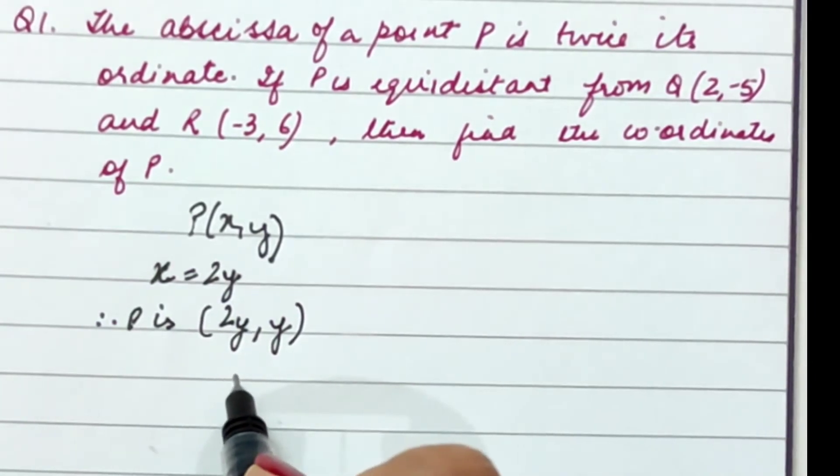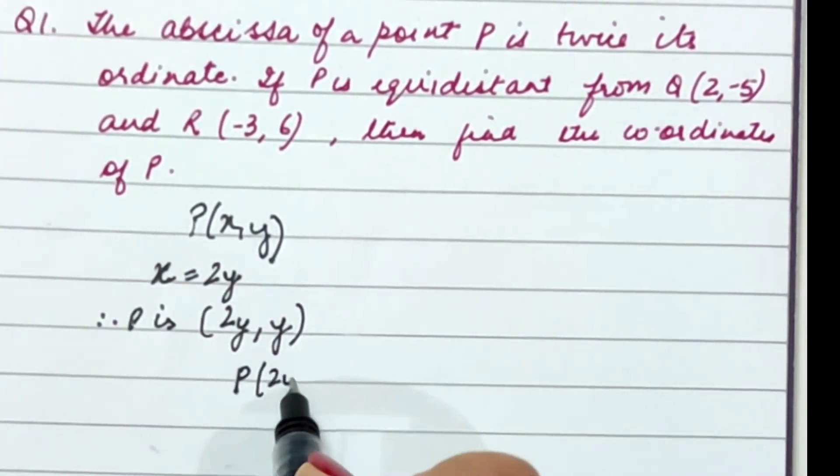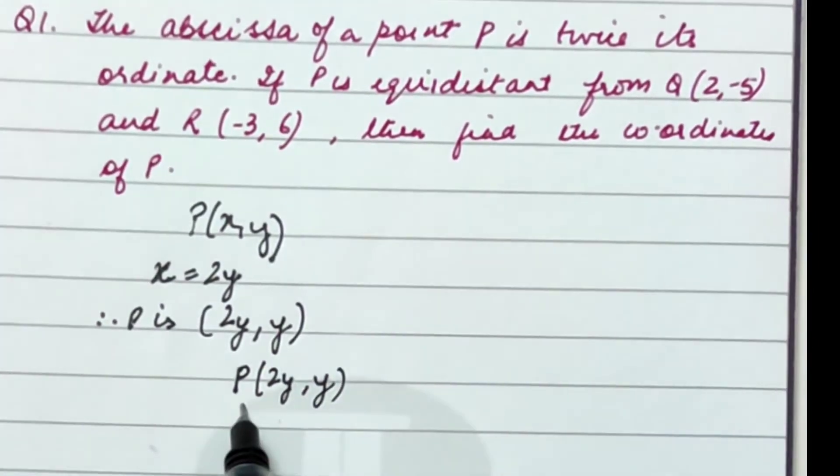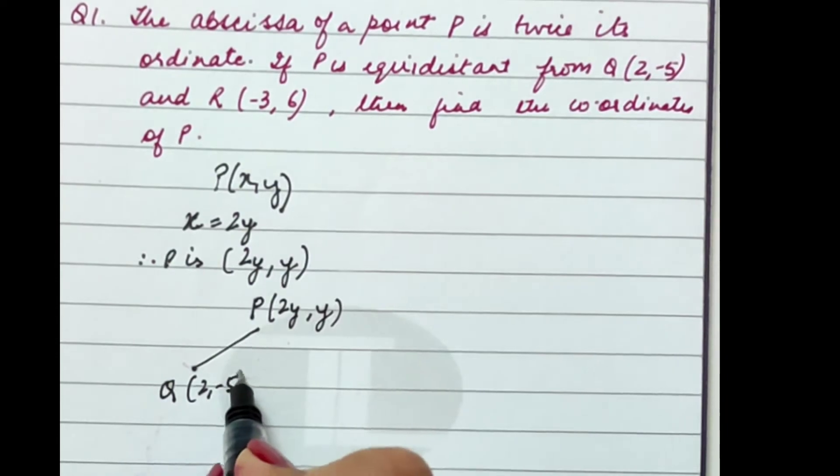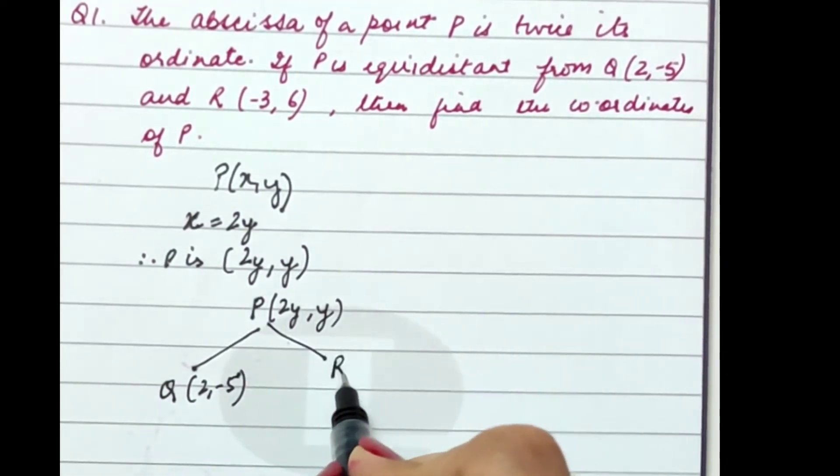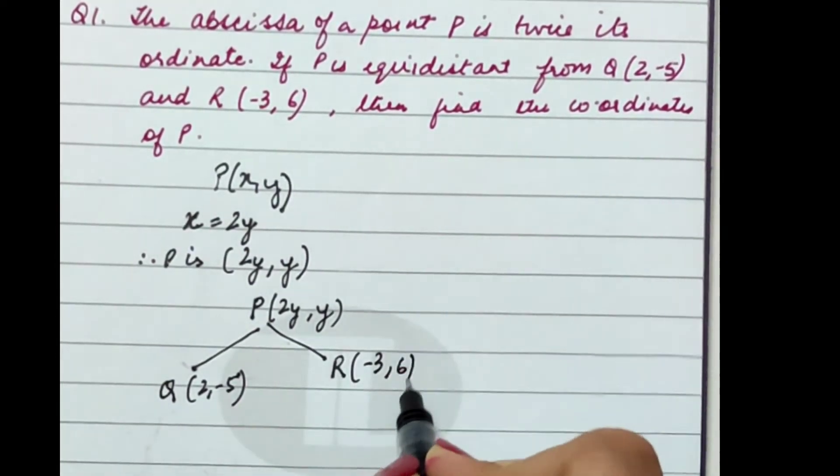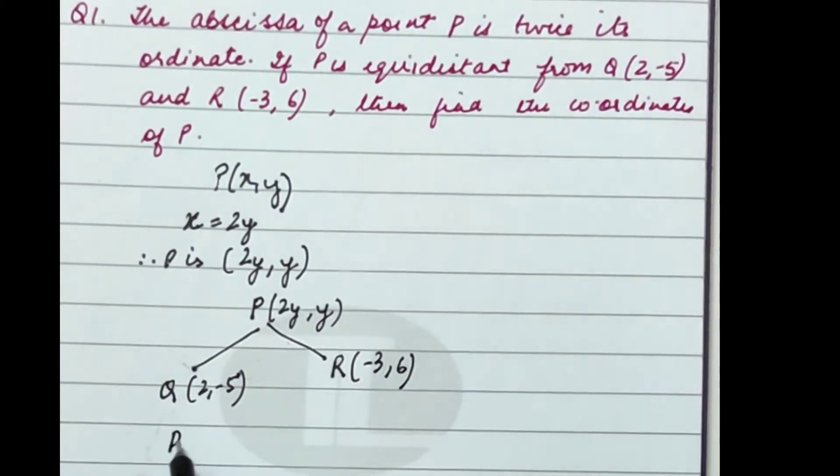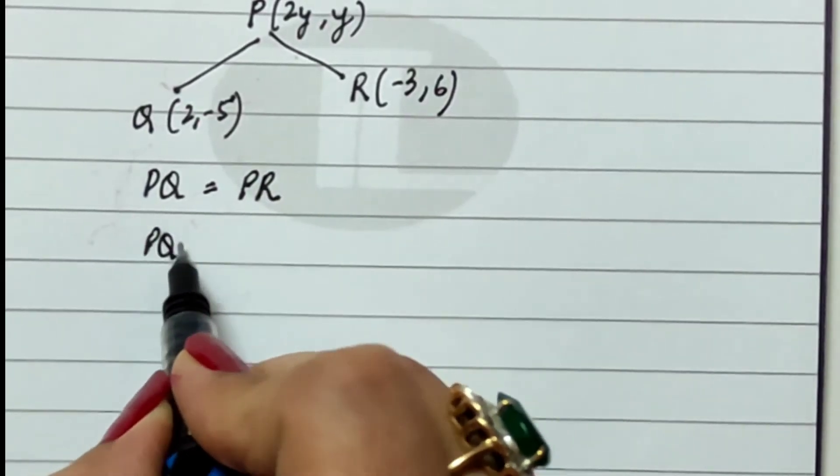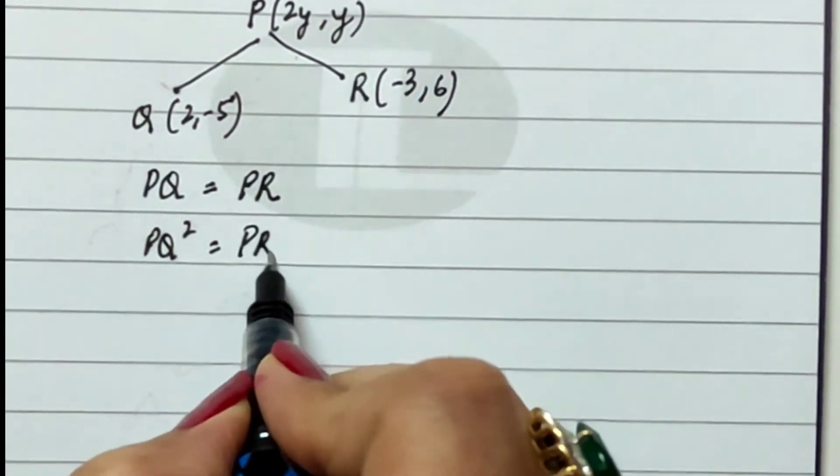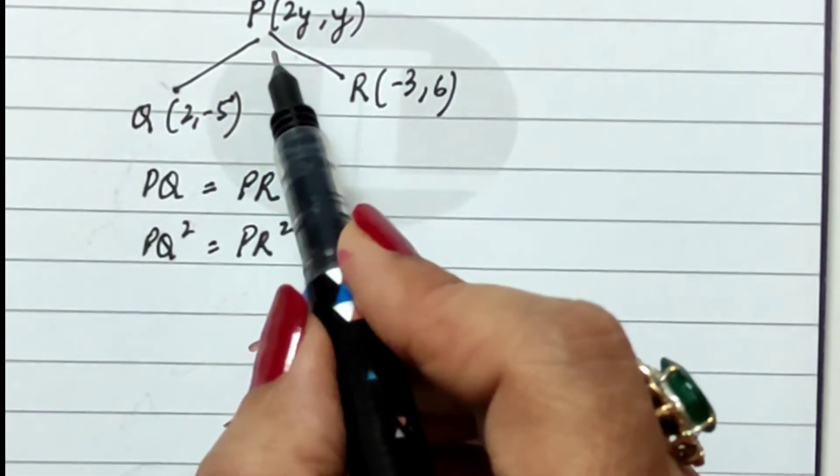It is also given to us that P is equidistant from Q and R. That means if I take the point P as (2y,y) and Q to be given as (2,-5) and R as (-3,6), then according to the question PQ has been given equal to PR.